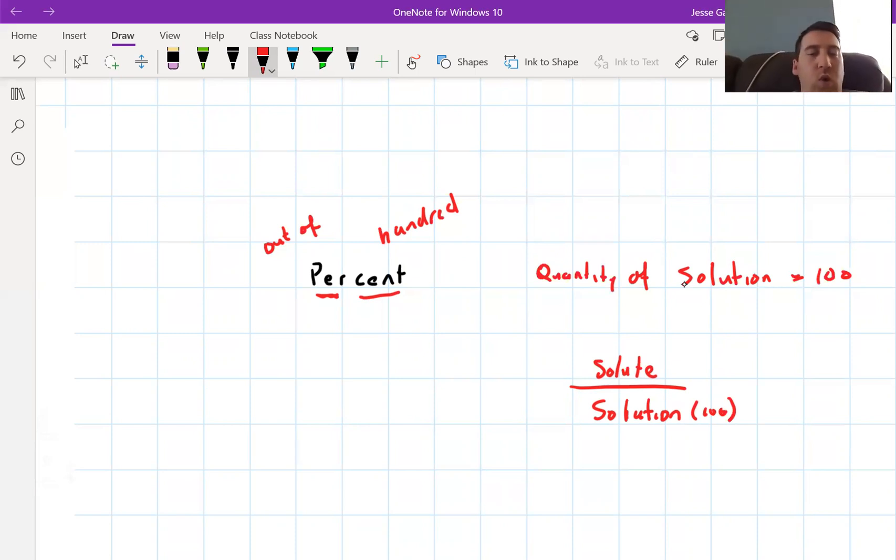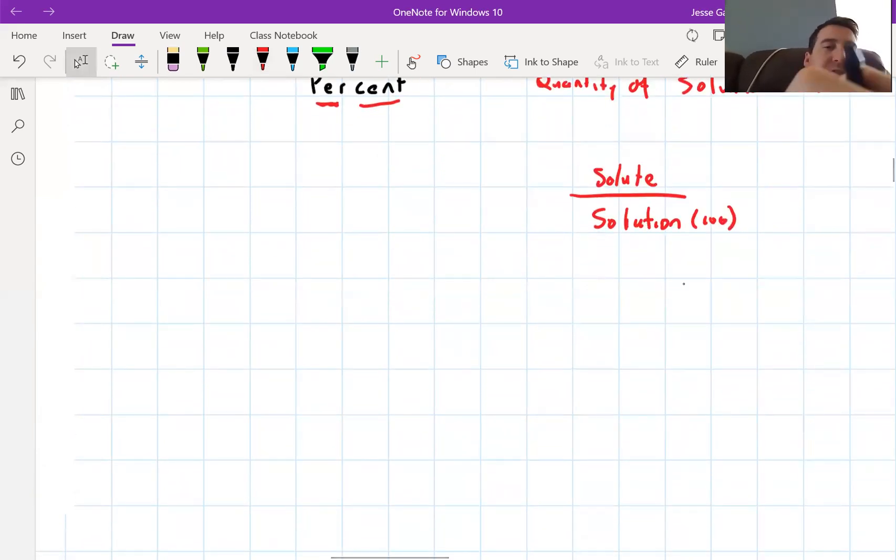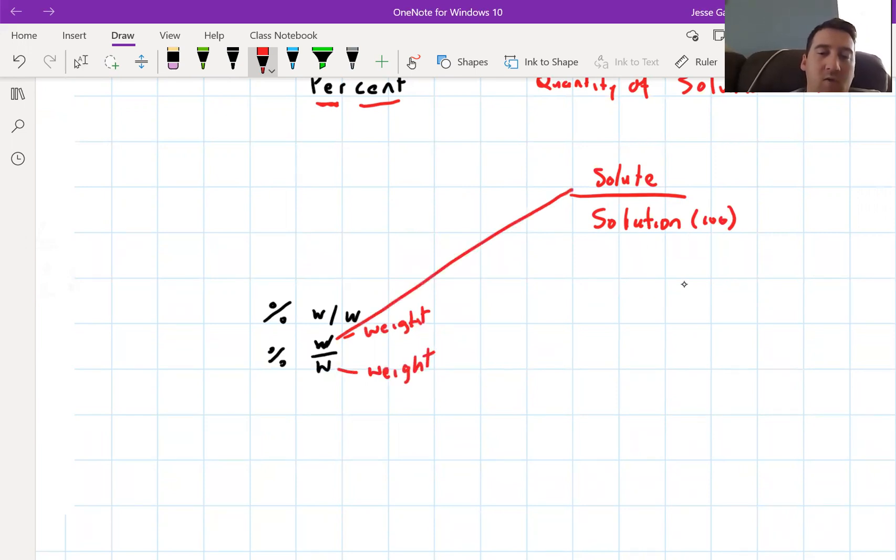The first way we can express concentration in percentage is percentage W/W, or W over W. The W stands for weight. It will be the weight of solute in grams over the weight of solution in grams. We'll be talking about how much solute is there in 100 grams of solution. That's what we want to work out - how much per 100 grams of solution.